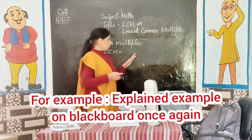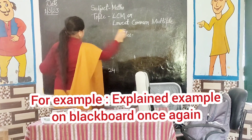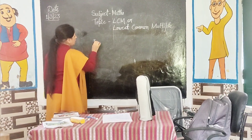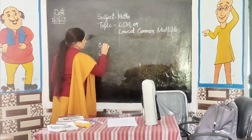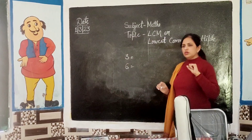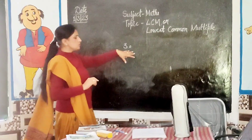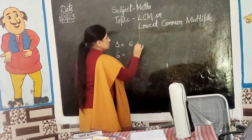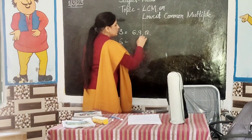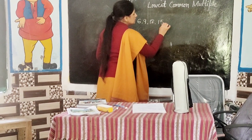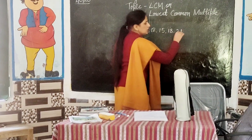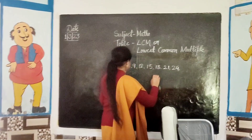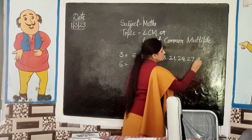Now it's your turn — 3 and 6. Stand up and tell me the multiples of 3. 3 ones are 3. 3 twos are 6. 3 threes are 9. 3 fours are 12. Very good — speak loudly. 3 fives are 15. 3 sixes are 18. 3 sevens are 21. 3 eights are 24. 3 nines are 27. 3 tens are 30. Very good.